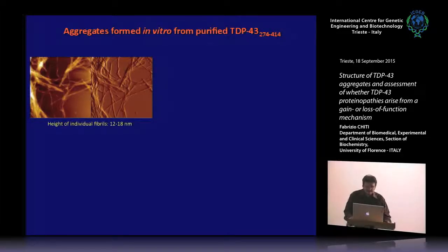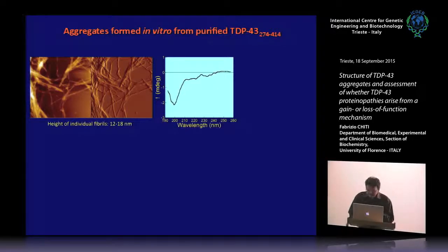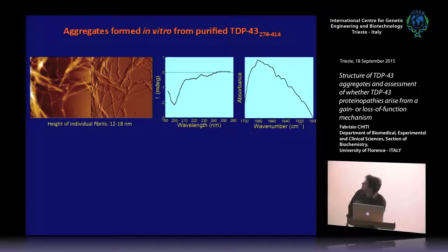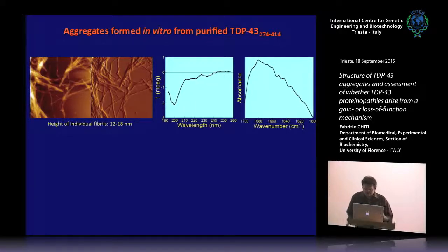With atomic force microscopy we found filaments or fibers. Using circular dichroism we found no beta-sheet structure — there was a minimum at about 198-200 nm, indicating lack of beta-sheet. Using FTIR we observed a peak in the amide I contour band region, but there were no peaks in the beta-sheet region. The absence of peaks in this region indicates that beta-sheet structure is absent or present to a very limited extent.